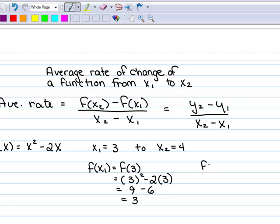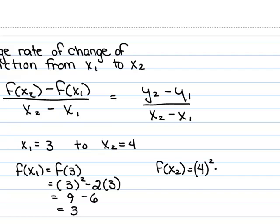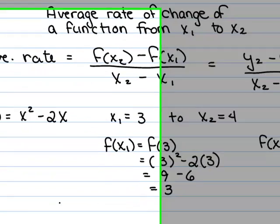To do f of x sub 2, the same idea. Plug in the number 4 now in for x and simplify it. So 4 squared minus 2 times 4, or 16 minus 8, which equals 8.